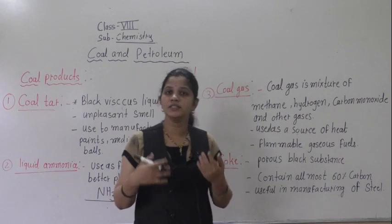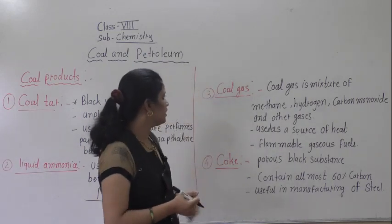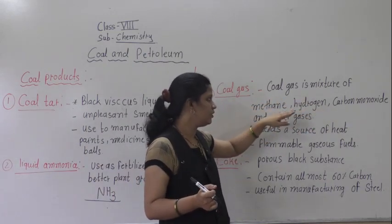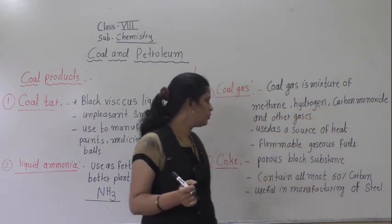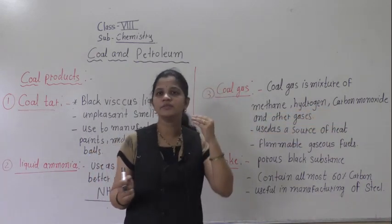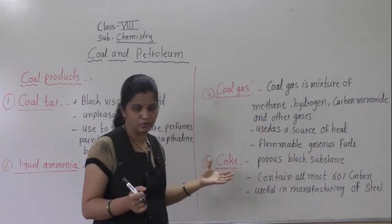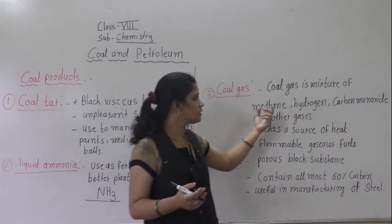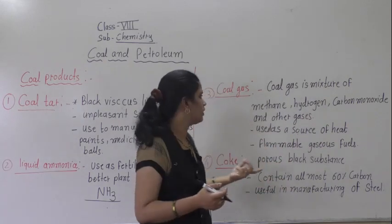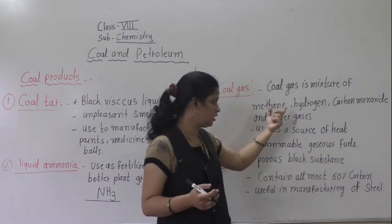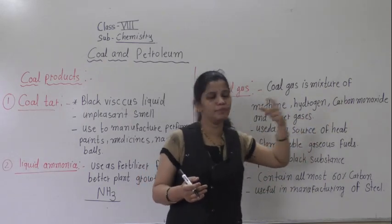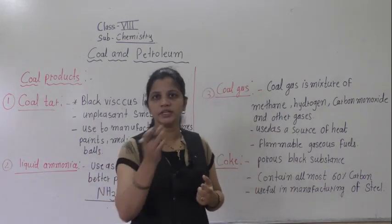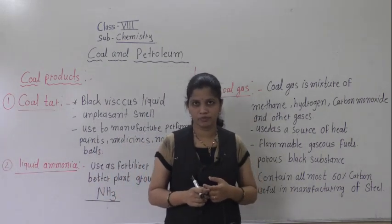Which gases are present in coal gas? Coal gas is a mixture of methane, hydrogen, carbon monoxide, and very small amounts of other gases. If you look at the percentages, these three gases — methane, hydrogen, and carbon monoxide — are present, along with other gases in a very small amount.